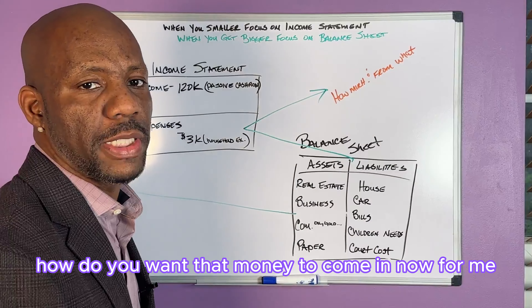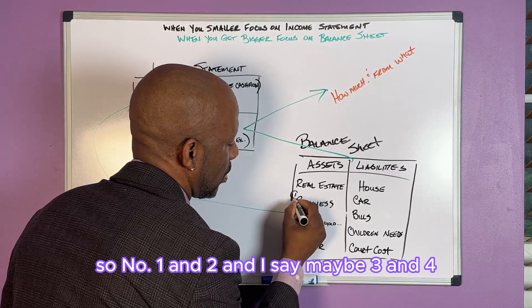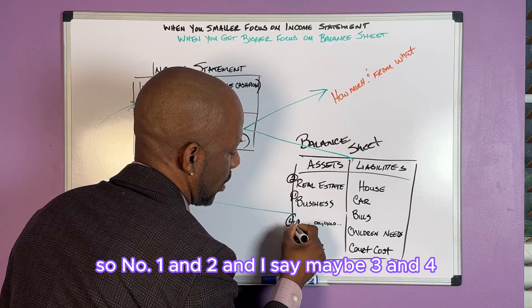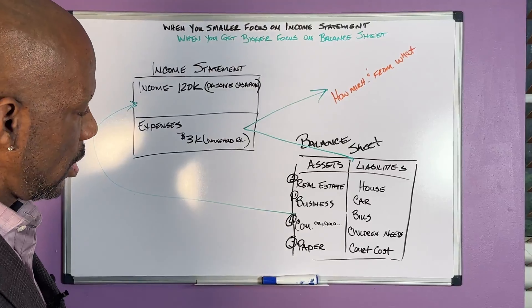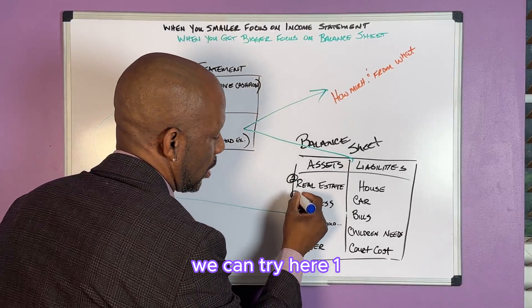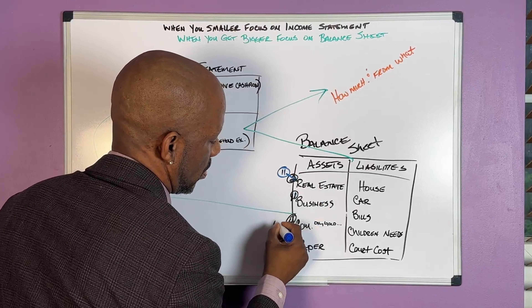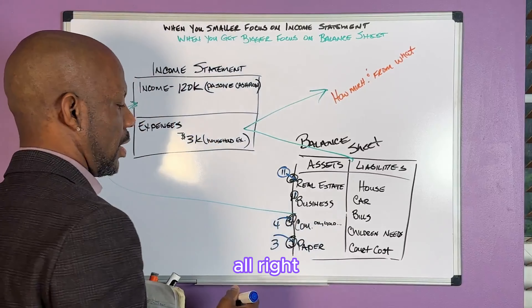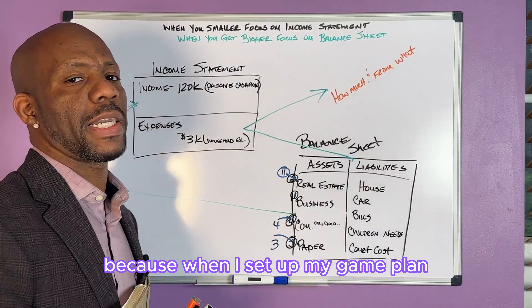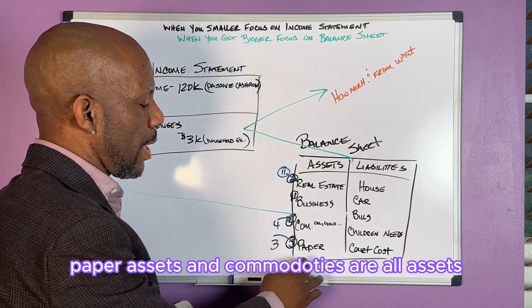How do you want that money to come in? For me I said: one, two, three, four — four income streams. That makes a difference. When I set up my game plan, I knew business was an asset, real estate is an asset, paper assets and commodities are all assets, so I knew exactly what I was going for.